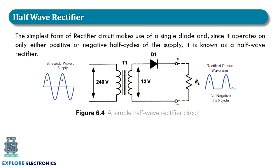Using this diode functionality we can have different kinds of rectifiers to convert an AC signal into a DC signal. The first one is the half wave rectifier. A half wave rectifier converts AC into pulsating DC, but the output will be half the cycles compared to the input signal.